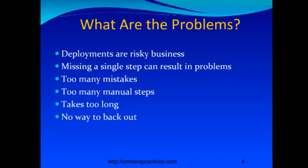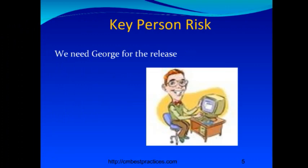Many release processes require a lot of manual steps that are very easy to make a mistake on. Overall, the release process just takes too long. And one of the things I really highlight is it's important to be able to back out. If you promote something forward and upgrade your production systems, you need to make sure you have some way to pull things back if you find a problem. Being able to back out is just as important as being able to go forward. And the most important problem is key person risk — where only one person knows how to do a release.